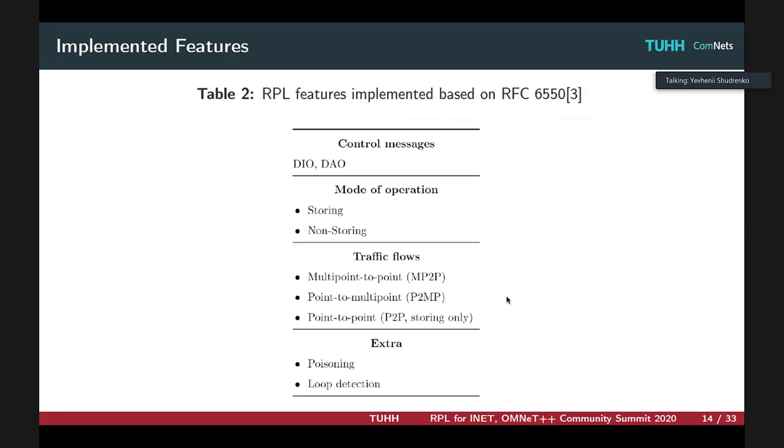The implemented features can be listed as follows. The two main control messages are implemented, DIO and DAO, that are required for topology construction and downward routes maintenance correspondingly. Both modes of operations as well as all traffic flows except for peer-to-peer traffic in storing mode, which requires source routing header construction by root and is a work in progress. Also, some of the extra features include poisoning mechanism, which I'll explain later, and loop detection mechanisms as well.